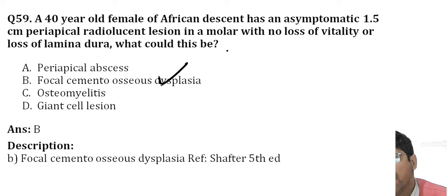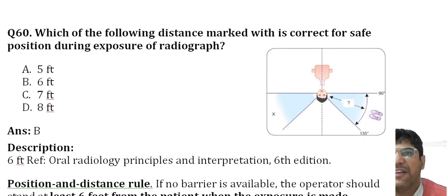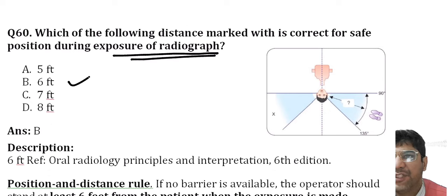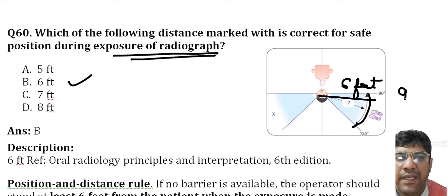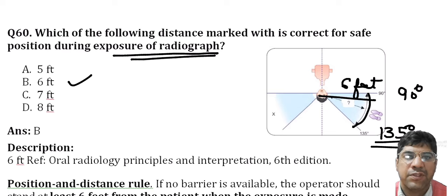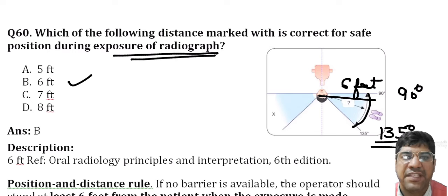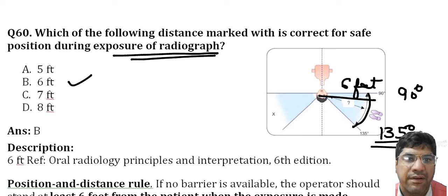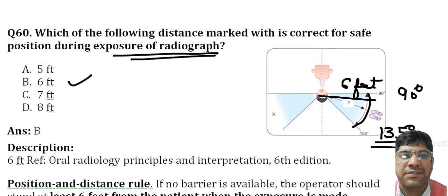Which of the following distances is correct for a safe position during radiograph exposure? It's six feet, and the angulation should be 90 to 135 degrees — important for exam purposes. According to the position and distance rule, if no barrier is available, the operator should stand at least six feet away from the patient while making the exposure, minimizing radiation exposure while still obtaining the necessary radiographic images.